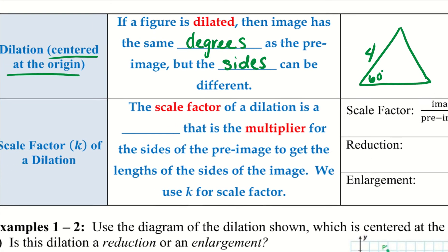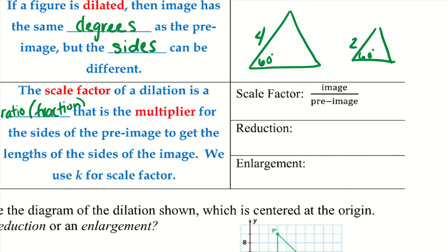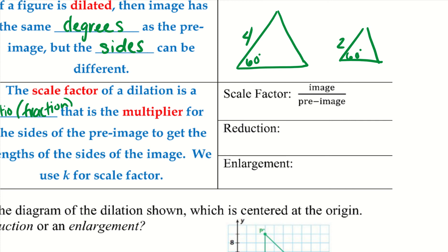Scale factor of a dilation: the scale factor is denoted with K. The scale factor is a ratio, or fraction, that is the multiplier for the sides of the pre-image to get the lengths of the sides of the image. To find the scale factor, we use image over pre-image. So if A prime is 4 and A is 2, the scale factor K equals 4 over 2, which reduces to 2.